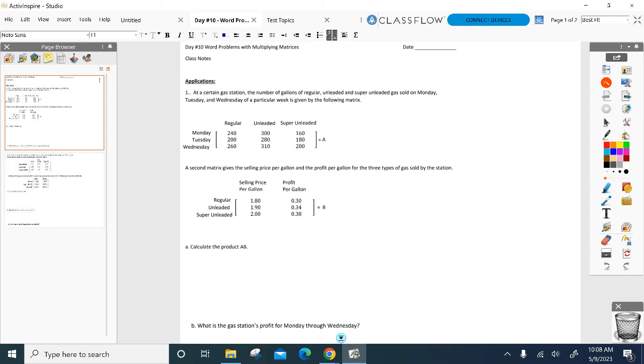Alright, so here we go with the first one. Now instead of just calling it matrix A and matrix B, the rows and columns have some meanings to them. Matrix A has days of the week for the rows, and up top you've got the type of gas sold. So on Monday you sold 240 gallons of regular. And then down in matrix B, again you have the types of gas being sold, how much we're selling it for on top, and the profit we get for selling that type of gas.